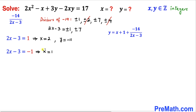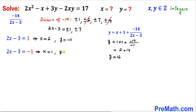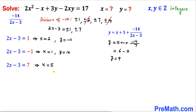For x equals 1: y equals (1 plus 1) plus (negative 14) divided by negative 1, since 2x minus 3 equals negative 1. So y equals 16. For x equals 5: y equals (5 plus 1) plus (negative 14) divided by 7, since 2x minus 3 equals 7. So y equals 4.